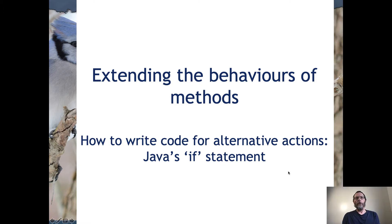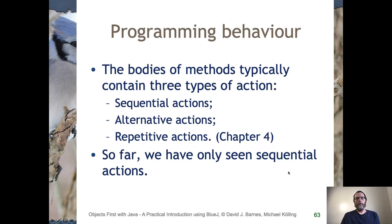In this video we're going to look at ways in which we can extend the behaviours of methods. In particular we're going to look at how to write code for alternative actions, and that means introducing Java's if statement. In regular programming, the bodies of methods typically contain three types of action: sequential actions, alternative actions that involve choices, and repetitive actions.